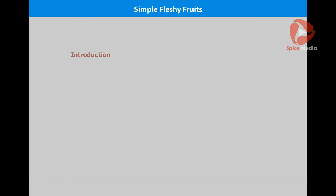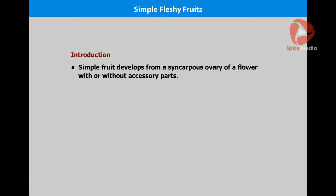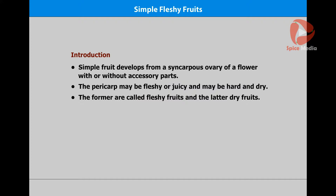The fruit that develops from a syncarpous ovary of a flower, with or without accessory parts, is called a simple fruit. In simple fruits, the pericarp may be fleshy and juicy, or it may be hard and dry. The former are called fleshy fruits and the latter dry fruits. Let us see some examples of simple fleshy fruits.